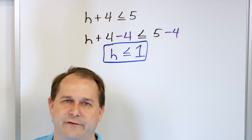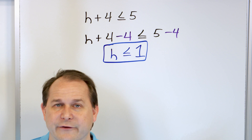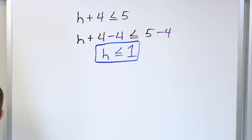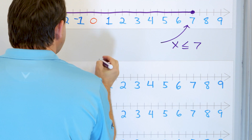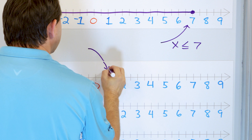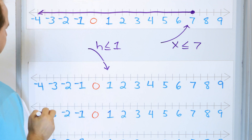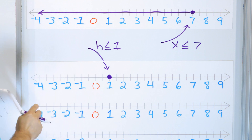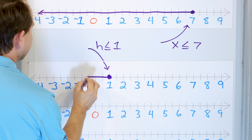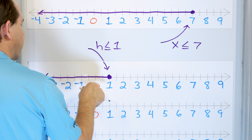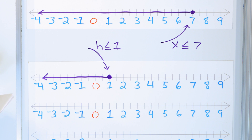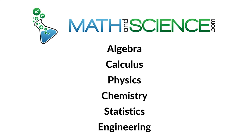This answer tells us all the possible values of the variable that work in the inequality. When we solved equations before, there was only one answer. But here there's an infinite amount of answers. For graphing: h is less than or equal to 1, so we put a solid dot at 1 and shade to the left for all smaller numbers. We already checked 0 and 1, and any other values to the left would also be correct.